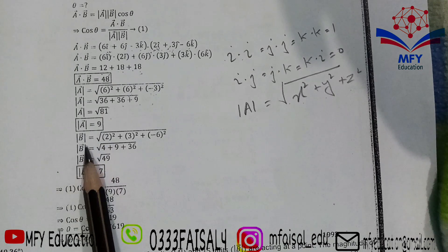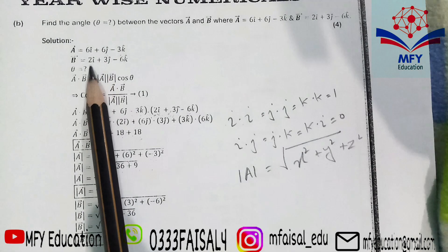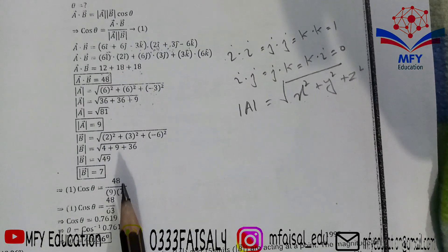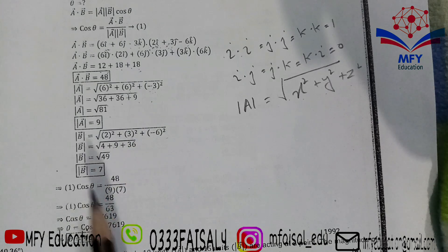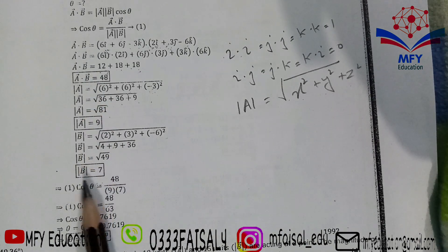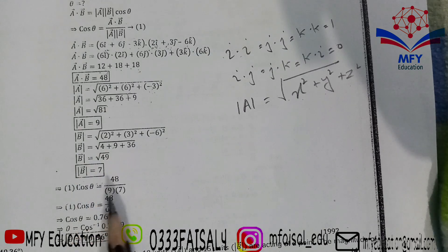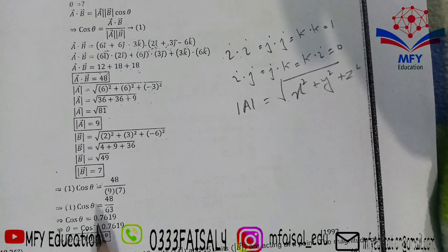Similarly, mod b: for vector b = 2i + 3j − 6k, x = 2, y = 3, z = −6. |b| = √(4 + 9 + 36) = √49 = 7. Now putting values into cos θ = a·b / (|a||b|) = 48 / (9 × 7) ≈ 0.76. Taking cos inverse: θ ≈ 40.36°. Question solved.